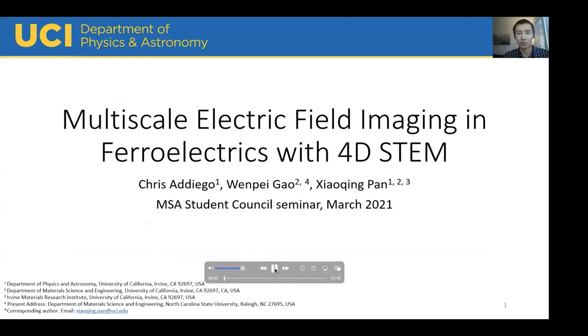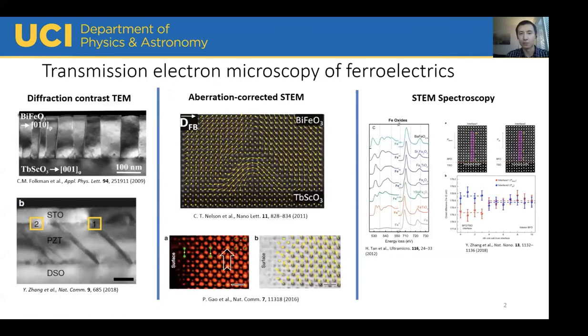Hello, everyone. My name is Chris Adiego. I'm from Professor Pan's group at UC Irvine. I'm going to be discussing multi-scale electric field imaging in ferroelectrics with 4D STEM. So ferroelectrics are materials where the atomic structure exhibits a spontaneous polarization. Like ferromagnets, they can form complex domain patterns, making high-resolution characterization important for understanding their properties. TEM imaging methods allow us to study the domain structure on a variety of length scales. Diffraction contrast TEM allows us to study the polarization patterns as a whole, at the scale of hundreds of nanometers. Aberration-corrected STEM allows us to measure the polarization of individual unit cells by mapping the displacement of individual atomic columns. And then STEM spectroscopy allows us to measure the chemical composition and study electronic properties of these materials.